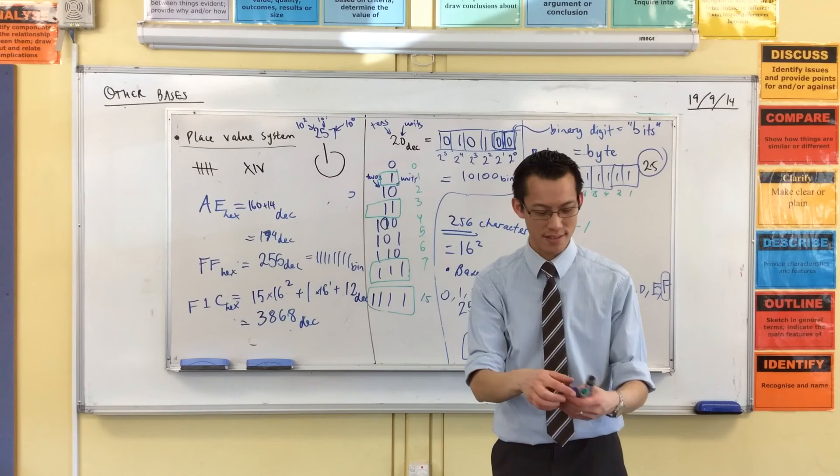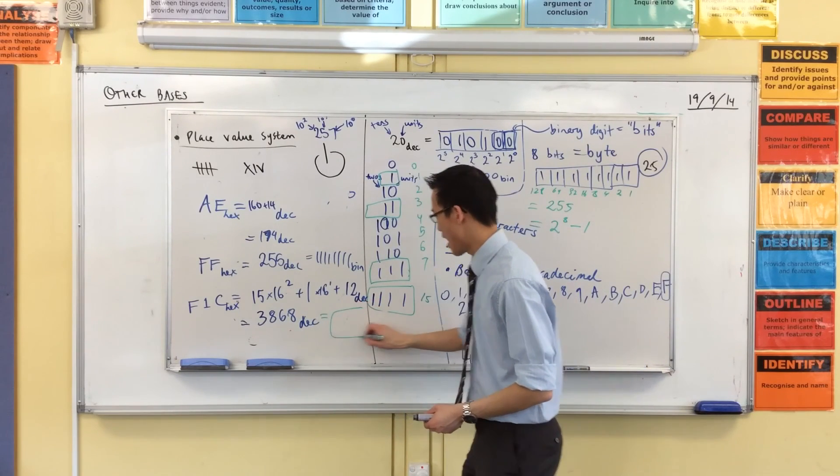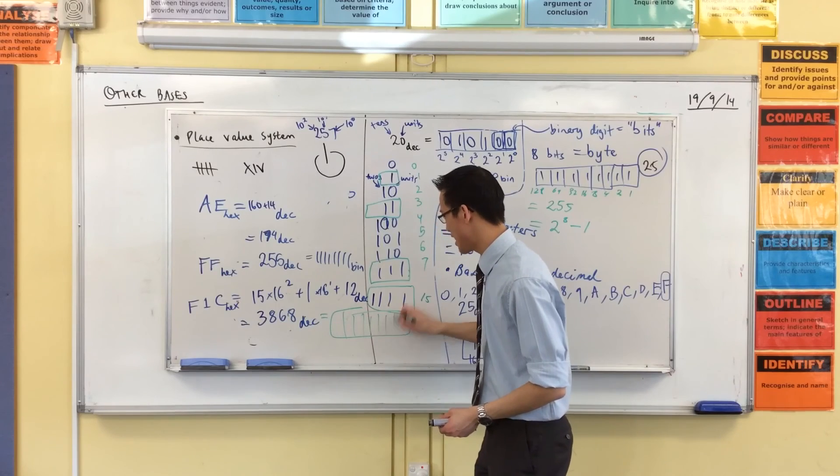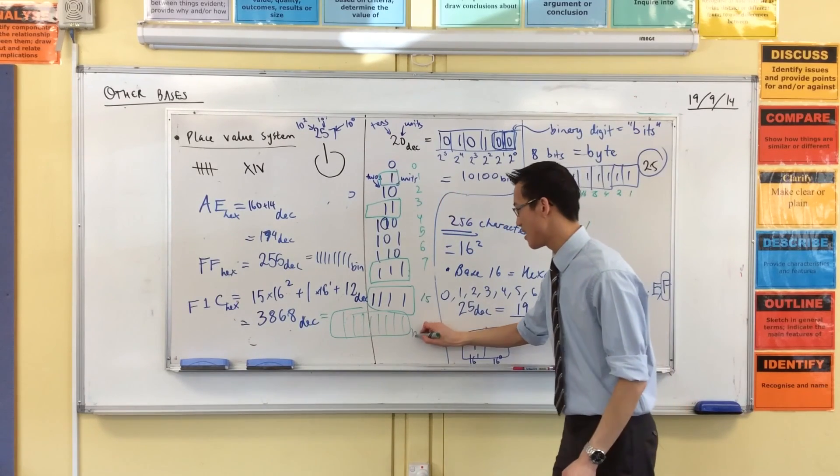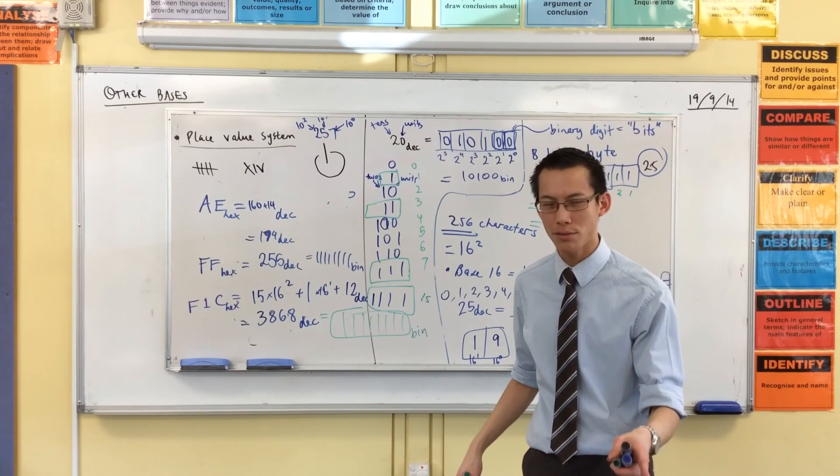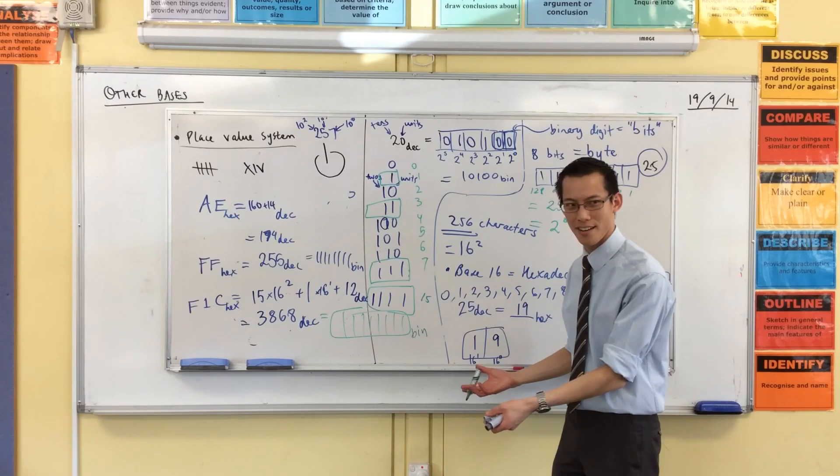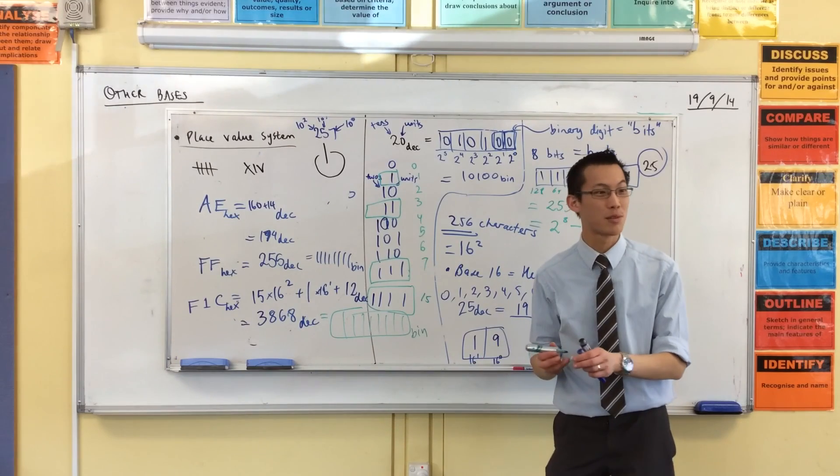Quick question for you. I won't make you answer it now, but how would you work out how many digits you would need to represent that in binary? Don't answer it, just think about it. Can it be solved without doing it by trial and error? Can you take an analytical approach to it? That's my question.